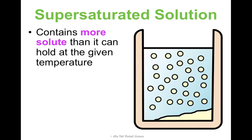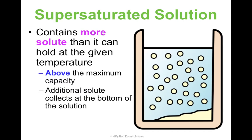A supersaturated solution contains more solute than it can hold — it's above its maximum capacity. That extra solute doesn't dissolve; it just collects at the bottom. You may have experienced this if you've gotten cold unsweetened tea and tried to add sugar — you keep adding it and it just starts collecting at the bottom of your cup. That's because it's supersaturated. So for room temperature water with a solubility of 10 grams, if I add 12 grams, 2 grams will not dissolve and will sit at the bottom.